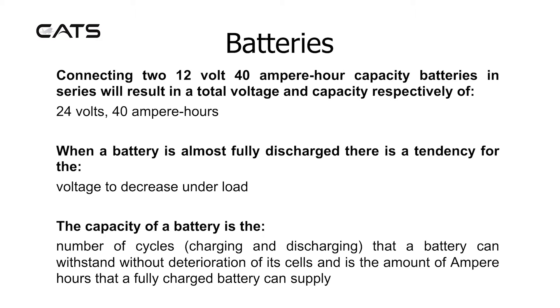The capacity of a battery is the number of cycles — charging and discharging — that a battery can withstand without deterioration of its cells, and is the amount of ampere hours that a fully charged battery can supply.